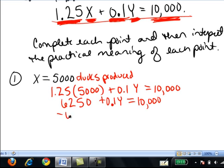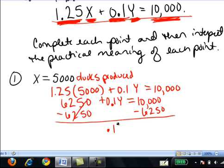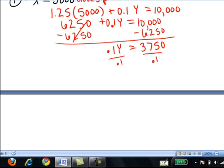We subtract 6,250 on both sides. And now we have 0.1y equals 3,750. I divide both sides by 0.1. And so y equals 37,500.